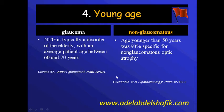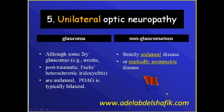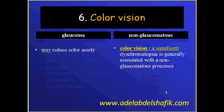The age: glaucoma usually occurs in older patients, while in non-glaucomatous cases, 93% of cases are below the age of 50. Regarding laterality: non-glaucomatous cases are usually unilateral or there is marked asymmetry between the two eyes, while primary glaucoma is usually bilateral. Color affection is significant in non-glaucomatous changes, while in glaucoma there may be some reduction in color acuity.